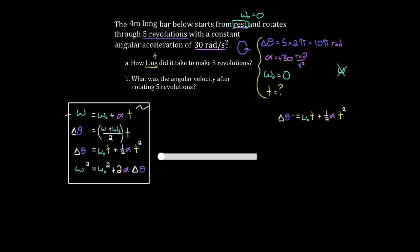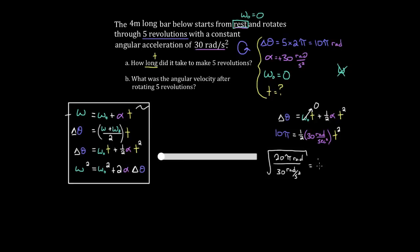Delta-theta equals omega-initial times t plus one-half alpha t-squared. Delta-theta is 10-pi radians, and omega-initial is zero, so that whole first term is zero. That leaves 10-pi equals one-half times 30 times t-squared. Multiplying both sides by two gives 20-pi. Dividing by 30 gives 20-pi radians divided by 30 radians per second squared. Taking the square root, we get t approximately equal to 1.45 seconds. The radians cancel, and we end up with seconds.